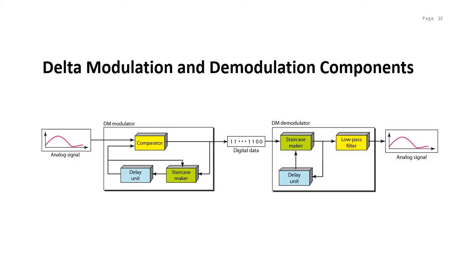In this figure, you can see the modulator and demodulator. The modulator performs the modulation of the data, and the demodulator takes the digital data, uses the staircase maker again with the delay unit, and creates the analog signal. However, it then needs to pass through a low-pass filter for smoothing. This diagram shows the whole process of delta modulation.